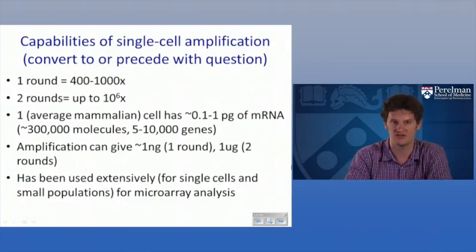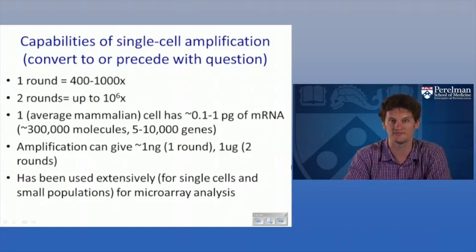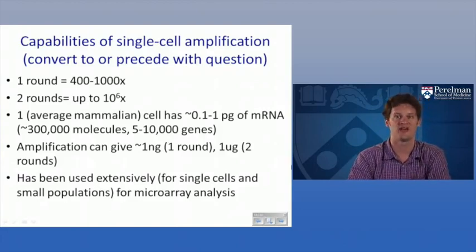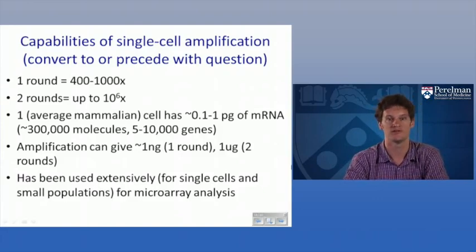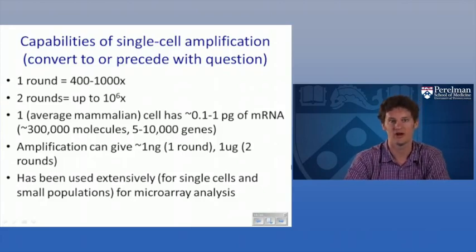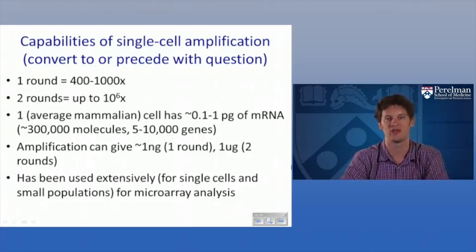With one round of Eberwine amplification you can get up to a thousand-fold increase in RNA yield, and up to a million-fold after two rounds. A typical mammalian cell has less than a picogram of mRNA — a few hundred thousand molecules corresponding to five to ten thousand different genes. In theory, with one round of amplification you can get somewhere near a nanogram, maybe a microgram after two rounds. In practice you don't always hit a million-fold, but two rounds gives you many nanograms — more than enough for microarray analysis or RNA sequencing from single cells.